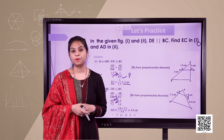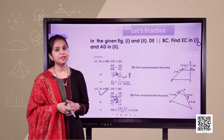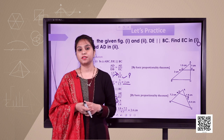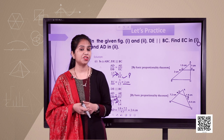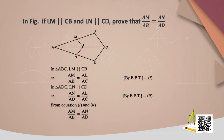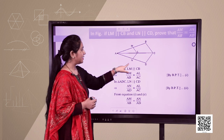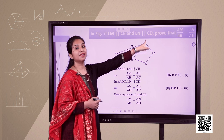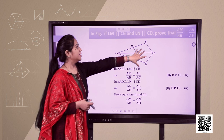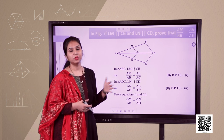With these two examples you have seen how to use BPT and the converse of BPT. Now we are going to discuss three very important theorems: AAA similarity criteria, SSS similarity criteria, and SAS similarity criteria. Let us first practice one more example. In the given figure, LM is parallel to BC and LN is parallel to CD. We have to prove that AM upon AB equals AN upon AD. We will use BPT or its converse one by one in both triangles separately.